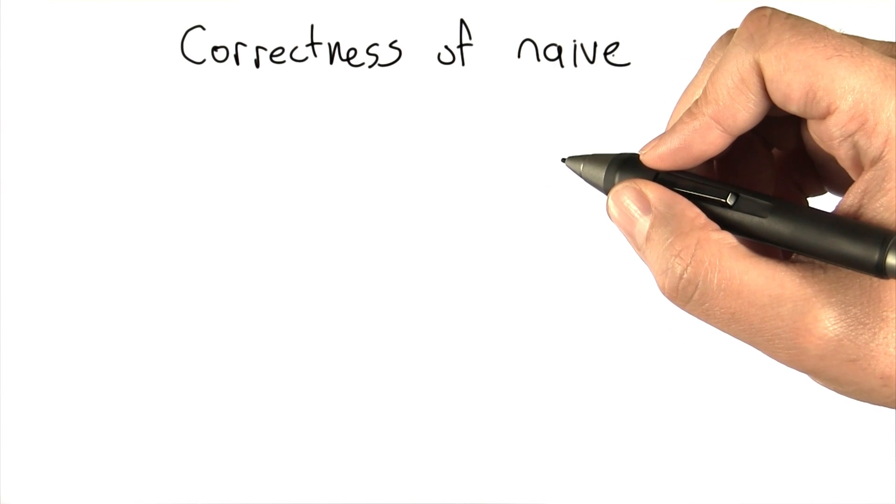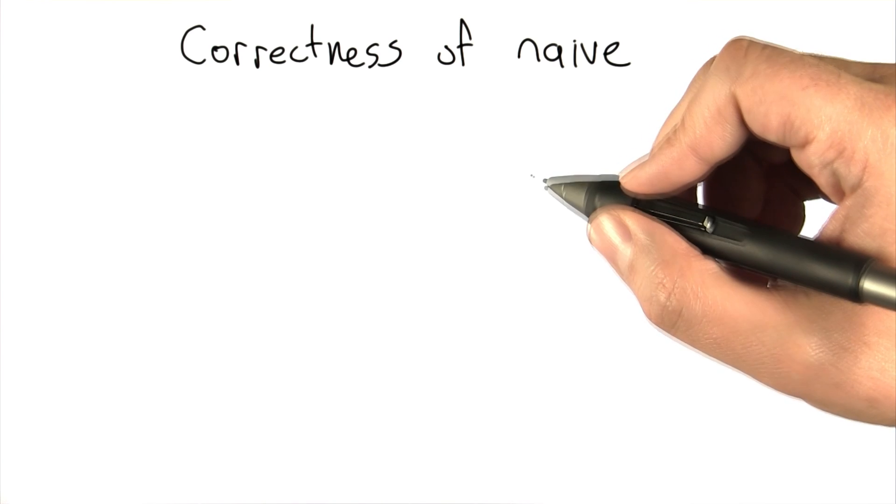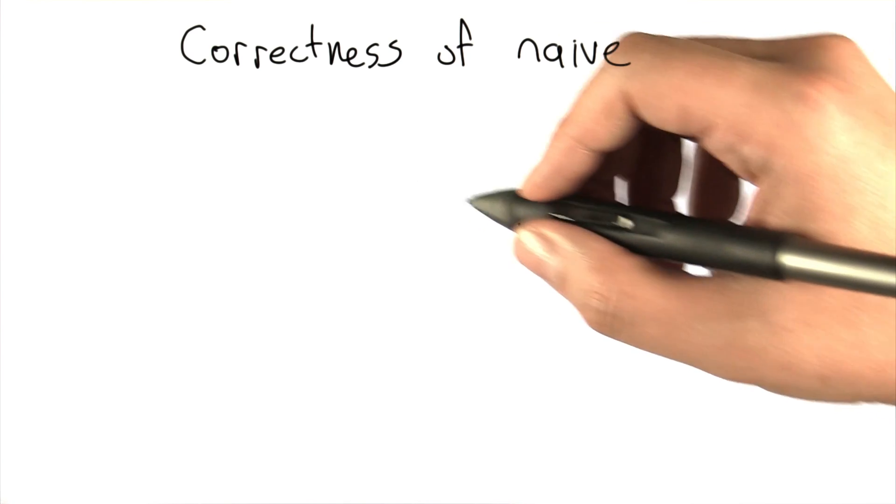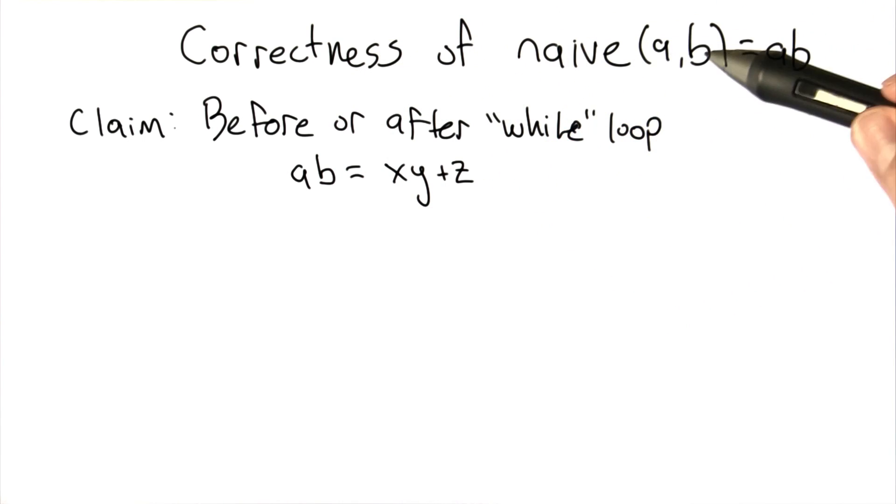Let's go through and actually do a proof of the correctness of the Naive algorithm we just spoke about. I'm going to proceed by taking advantage of a particular observation. What we're trying to prove here is the correctness of the claim that Naive AB outputs the product of A and B.